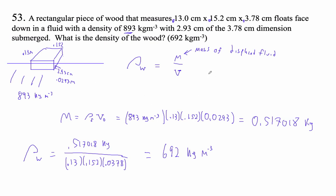So you can set up a little proportion here. The density of the object over the density of the fluid is the X submerged over the X total. The density of the object is what we're solving for. The density of the fluid is 893. That's going to equal the amount submerged, so 2.93 divided by 3.78.